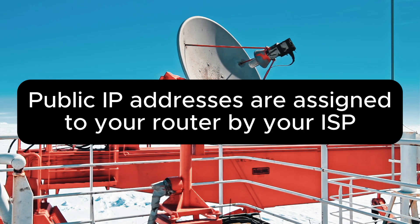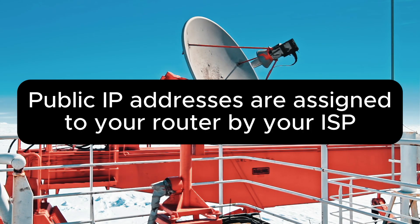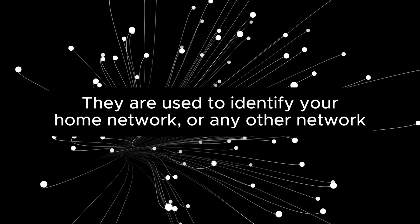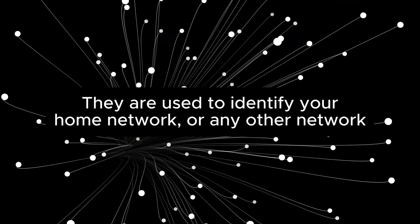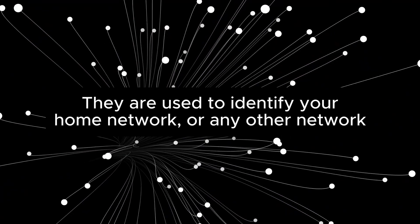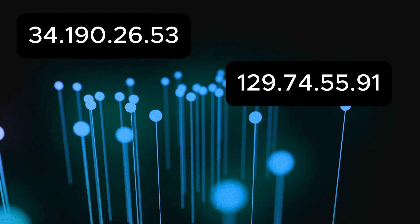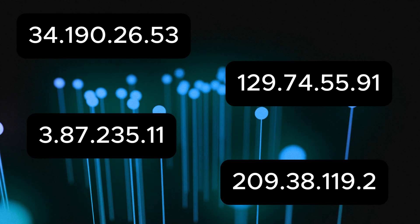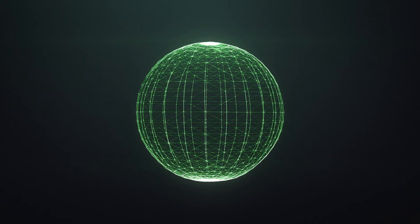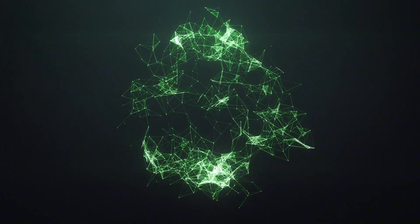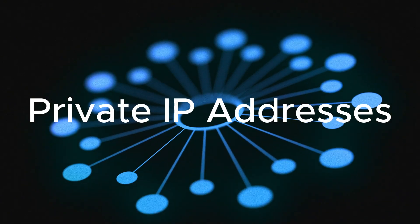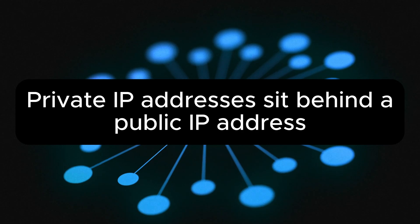A public IP address is unique across the internet. They are assigned to your router by your ISP, or Internet Service Provider, and are used to identify your home network or any of the smaller networks that make up the internet. They can look like any number of formats. When you purchase internet for your home or office, your ISP gives you a router with a public IP address that is all your own.